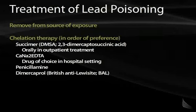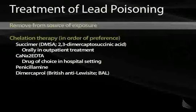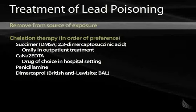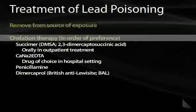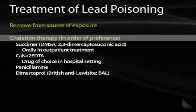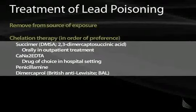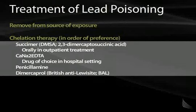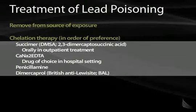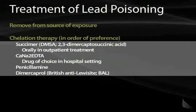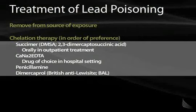To treat lead poisoning, the most important thing is to remove the patient from the source of exposure. Chelation therapy is then given: succimer or DMSA (dimercaptosuccinic acid) in the outpatient setting, or EDTA given IV for hospitalized patients. Penicillamine and dimercaprol can also be used, but succimer is generally considered the most successful medication.